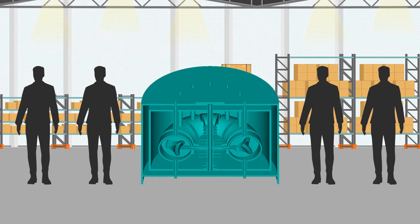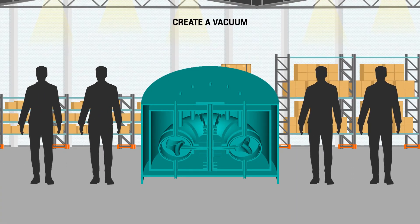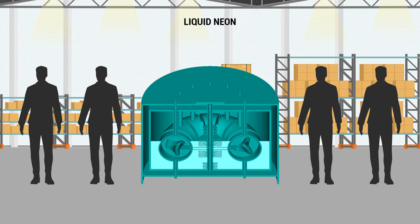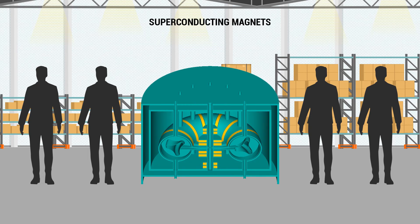The first step in the process is to create a vacuum inside the inner and outer chambers. The second step is to fill the outer chamber with liquid neon. The third step is to turn on the high temperature superconducting magnets. The fourth step is to turn on the high frequency gyrotron.